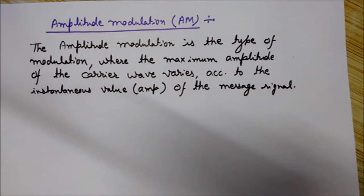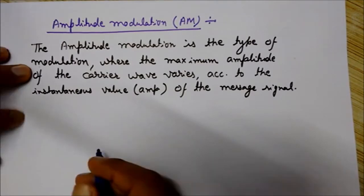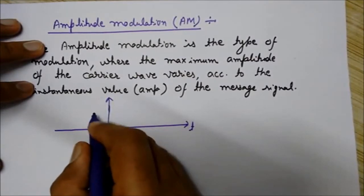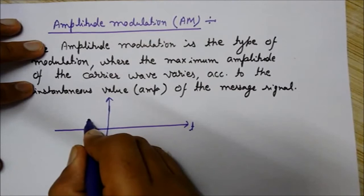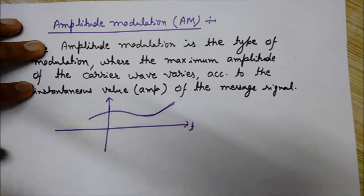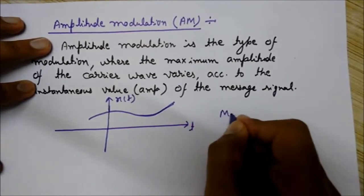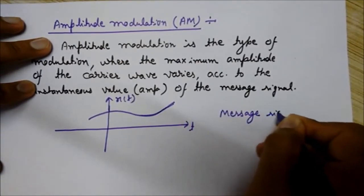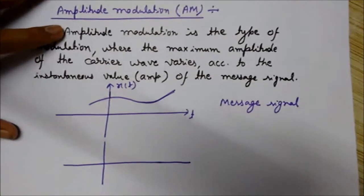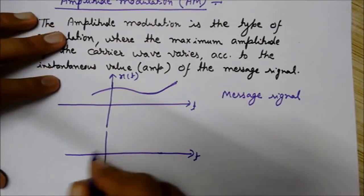Now I will draw a diagram to help make the concept more clear. If this is the time axis, the signal that I want to transmit is the message signal — this is the waveform of the message signal, denoted by x(t). This is the time axis. And this one is the carrier wave, which has very high frequency.